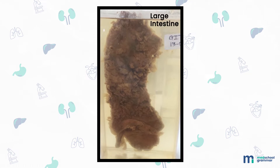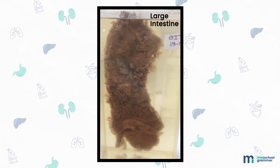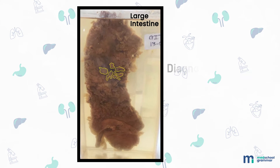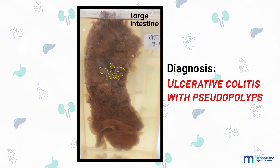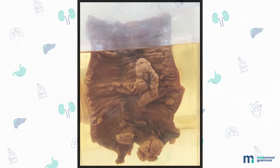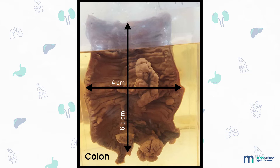Our next specimen is a segment of the large intestine measuring 20 centimeters in length and 5 centimeters in diameter, with an attached appendix. The external surface is unremarkable, while the internal surface shows a mucosa with multiple ulcers arranged in a linear fashion, with hemorrhage and multiple small slender mucosal projections or pseudopolyps. Diagnosis: this is a specimen of ulcerative colitis with pseudopolyps.